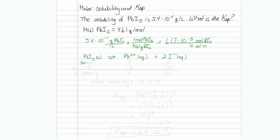Initially we start with some, nothing and nothing, and on the delta row we lose some, gain some, gain 2x here, and when we're done we have some minus x, x and 2x.